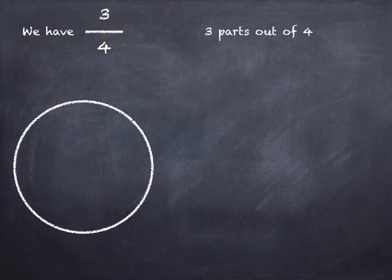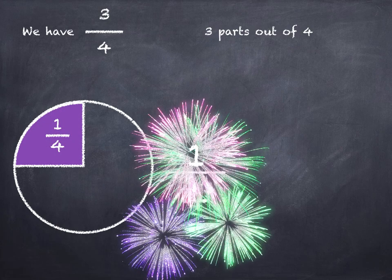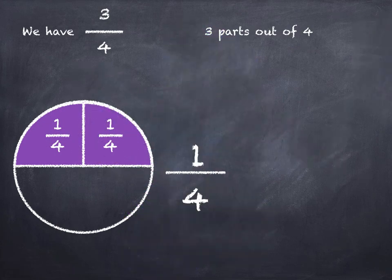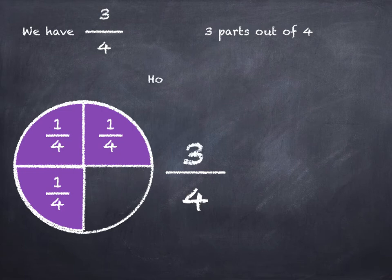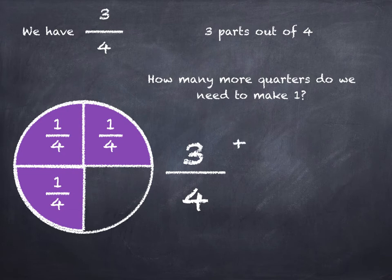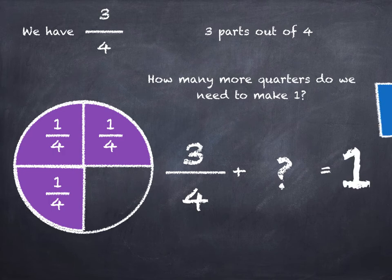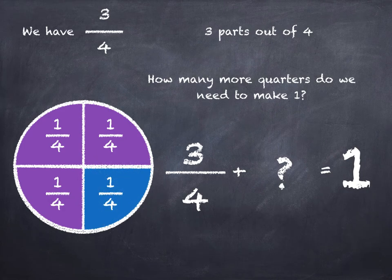We have three quarters — three parts out of four. One quarter, two quarters, three quarters. How many more quarters do we need to make one? Three quarters and how many quarters equals one? Let's complete the circle. It's one more quarter. So three quarters plus one quarter equals one.